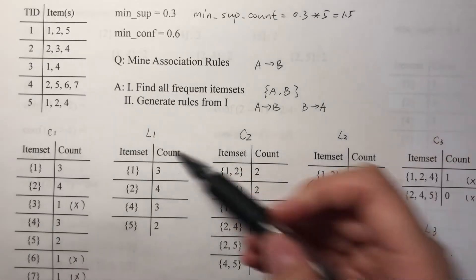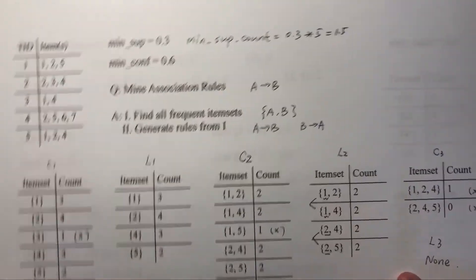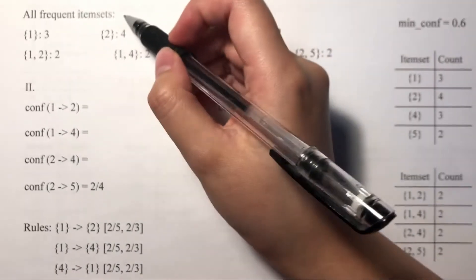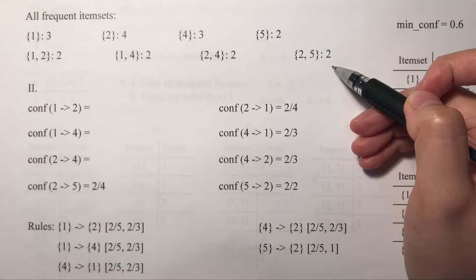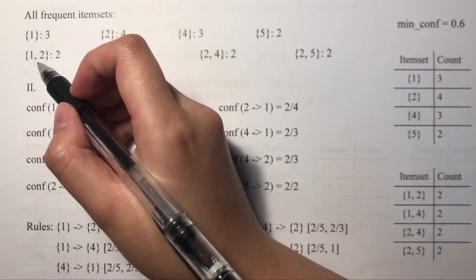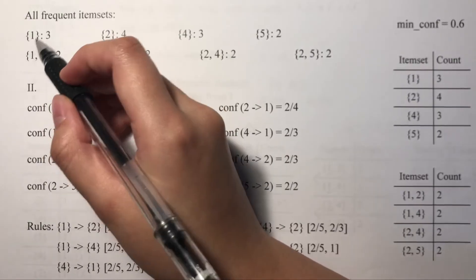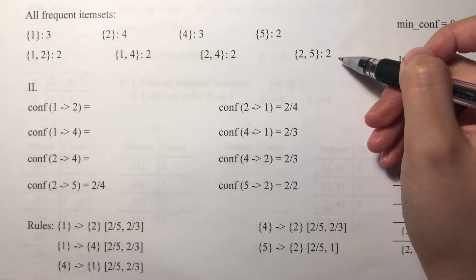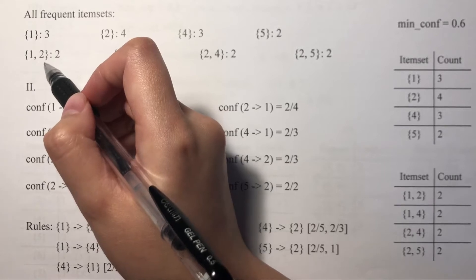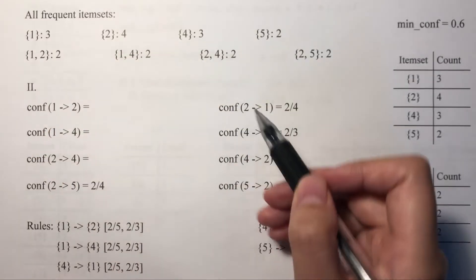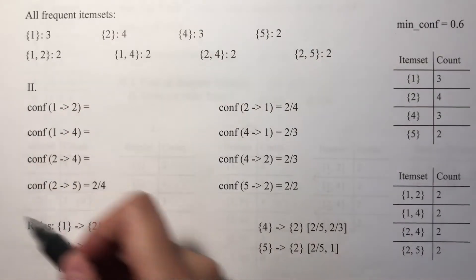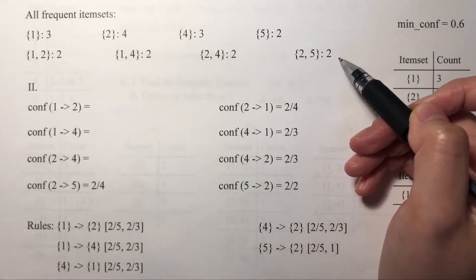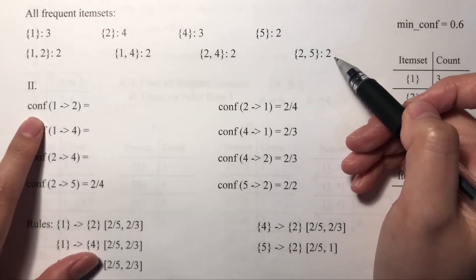We've now found all frequent itemsets from level one and level two. Now let's move to the second step: generate rules from the frequent itemsets. We start from level two because level one itemsets have only one element and cannot generate any rules. For example, from the itemset {1,2} we can generate rules 'if 1 then 2' or 'if 2 then 1'. We can generate eight rules total from the four frequent itemsets.